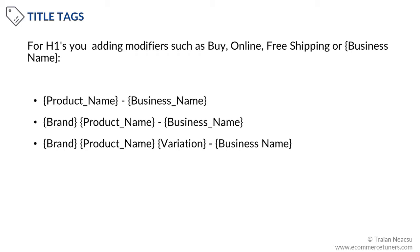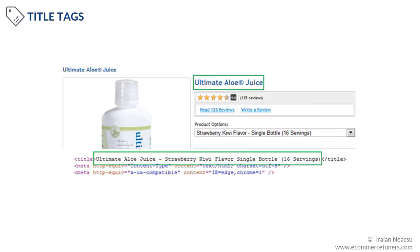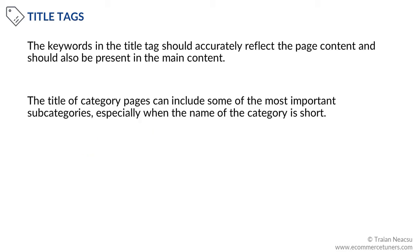You can use the H1 product naming convention in the title tag as well, but you need to change it a bit — for instance, by adding modifiers such as buy, online, free shipping, or your business name. Keep in mind that the keywords in the title tag should accurately reflect the page content and should also be present in the main content area. For category pages, when a category page lists subcategories either in the faceted navigation or the main content area, the title tag can include some of the most important subcategories. This is especially important when category names are very short — for example, Nordstrom includes cocktail dresses and maxi dresses in their title tag for the Women Dresses query. This approach works best for top-level categories with short names.